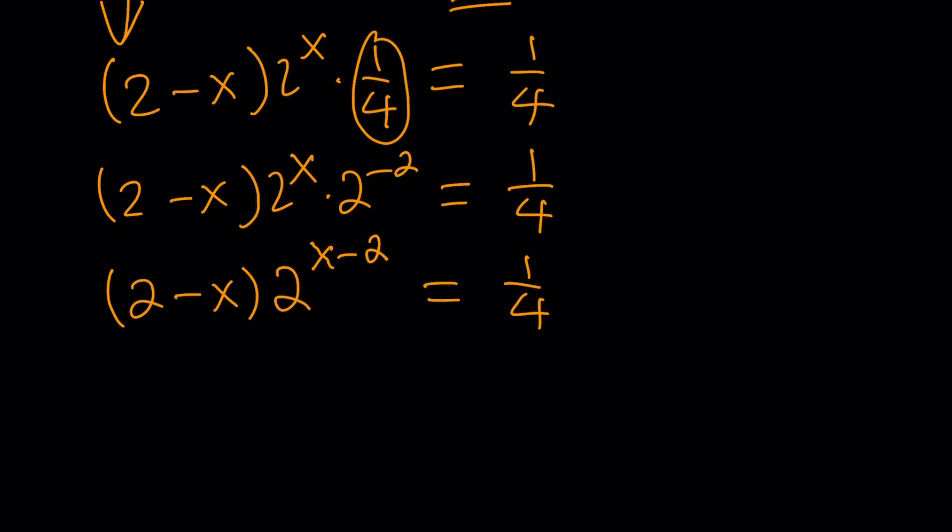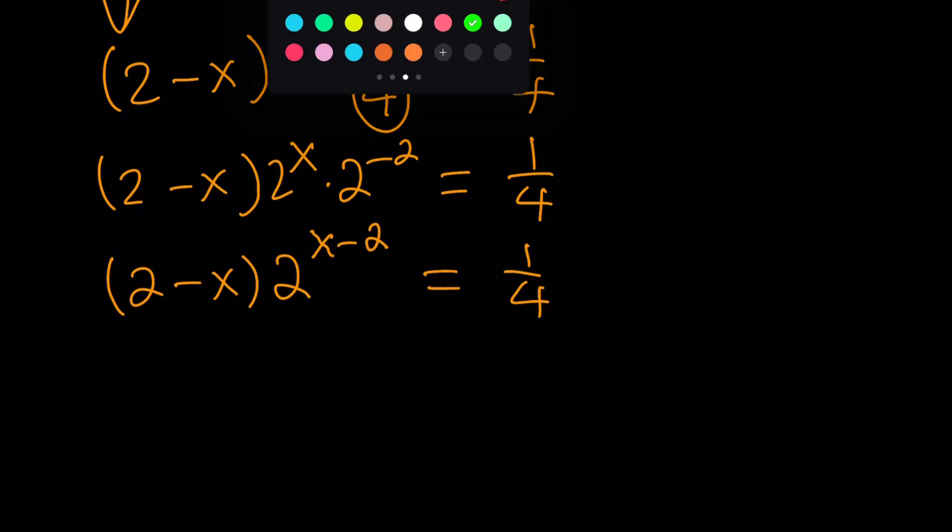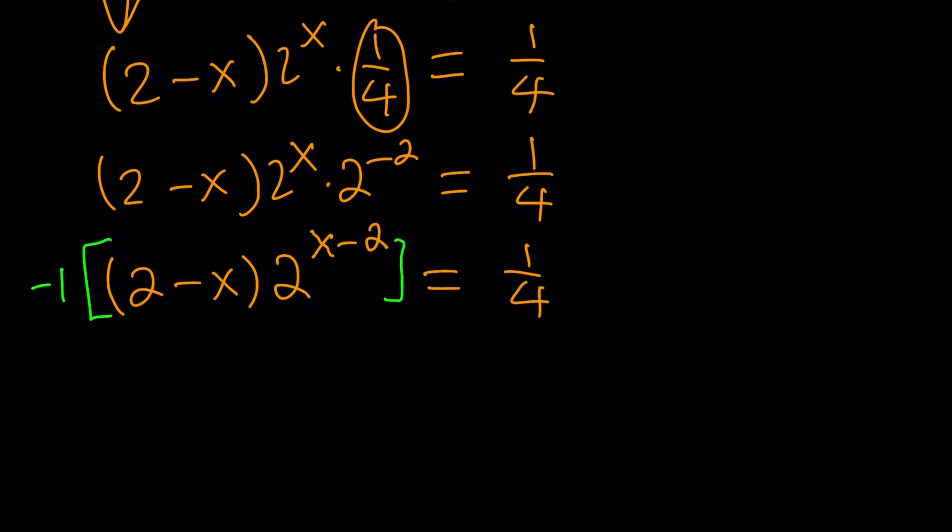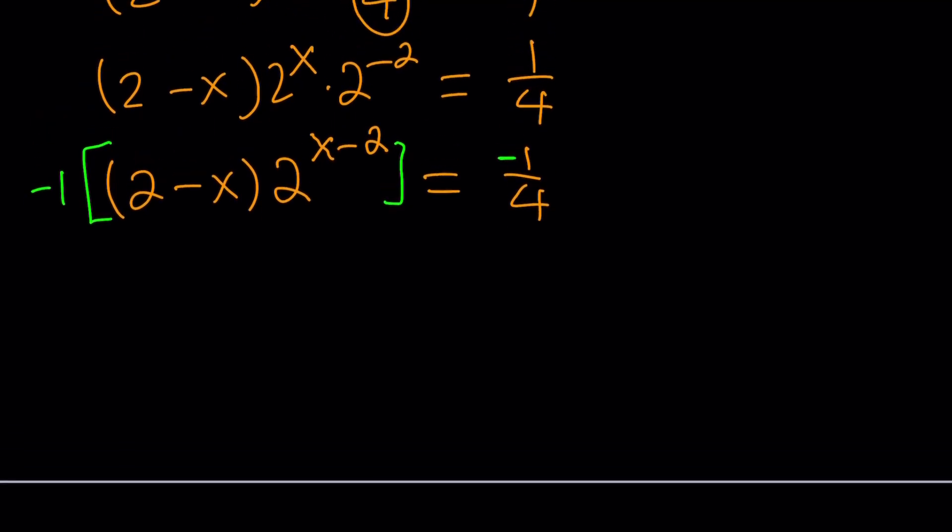Let's combine these two exponentials. This is going to give us 2 to the power x minus 2, and the whole thing is equal to 1 fourth. Notice that my exponent is x minus 2 and whatever multiplies it is 2 minus x. They're opposites, so we can easily take care of that by negating both sides. Multiply by negative 1 and you're good.